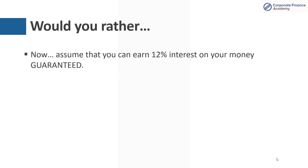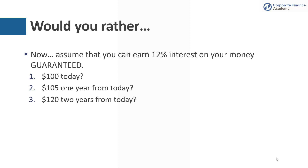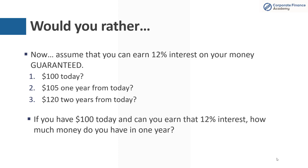But let's make the question a little more complicated. Now let's assume that you can earn 12% interest on your money guaranteed — so effectively a risk-free rate of return of 12%. Would you rather have $100 today, $105 one year from today, or $120 two years from today? So if you have $100 today and you can earn 12% interest, how much do you have in one year? With simple math, $100 at 12% interest gives you $112 in one year.